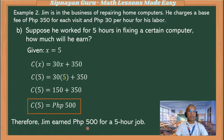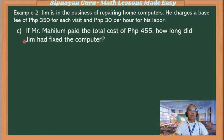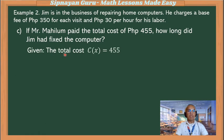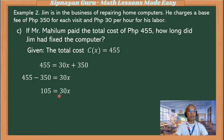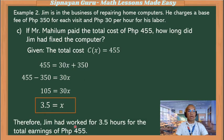Therefore, Jim earned 500 pesos for a 5-hour job. Third question: if Mr. Mahilom paid a total cost of 455 pesos, how long did Jim fix the computer? The given function is c(x) = 30x + 350. Substitute: 455 = 30x + 350. By the addition property of equality, transpose 350 to the left: 455 minus 350 equals 105, and 105 = 30x. Divide both sides by 30, so x = 3.5. Therefore, Jim had worked for 3.5 hours for total earnings of 455 pesos.